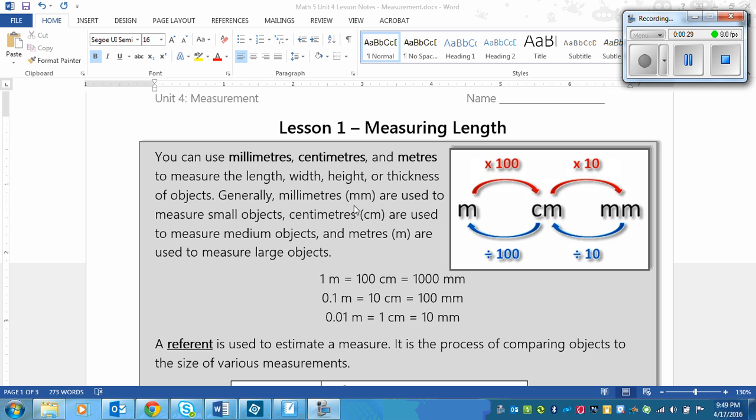Generally millimeters, written as lowercase m lowercase m, are used to measure small objects like the length of a small bug. Centimeters, written as lowercase c lowercase m, are used to measure medium-sized objects so that might be the size of a TV remote.